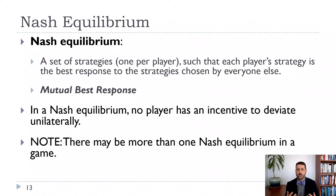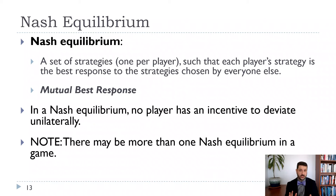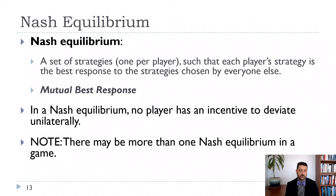What John Nash showed — one of the reasons he won the Nobel Prize in economics — is that there's always going to be an odd number of Nash equilibria. You might wonder: our coordination games had two Nash equilibria, and two is not odd. That's when we include mixed strategy equilibria. Mixed strategies mean randomizing your strategies to some extent. In rock-paper-scissors, there's no pure strategy equilibrium — you can't always throw rock, paper, or scissors. You have to mix it up. Including mixed strategies, there's always an odd number of equilibria.